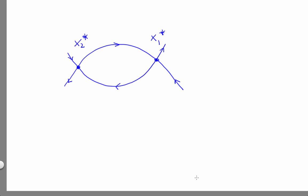Here we've got two fixed points, x1 star and x2 star, and I've drawn in the stable and unstable manifolds in blue. And here are the eigenvectors at x1 star, shown in red. The red curves are locally tangent to the blue curves.